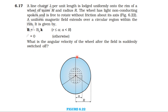We consider the rim as a charged ring with linear charge density lambda per unit length. The magnetic field exists in the circular region from 0 to a, where the field is minus B₀ k-hat in the xy-plane. For distances greater than a, the magnetic field is zero.